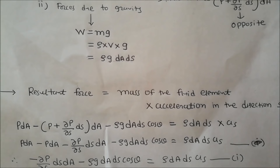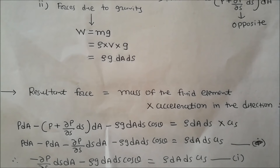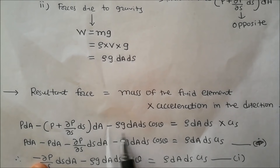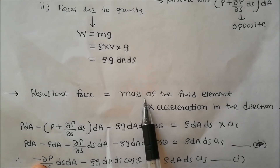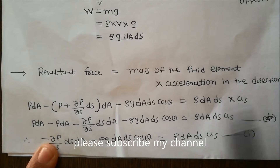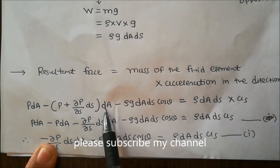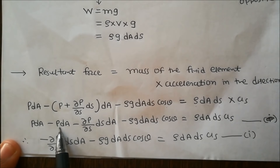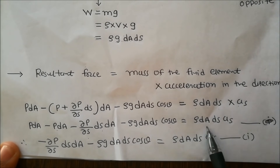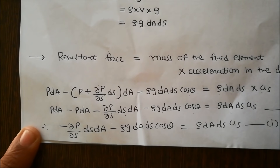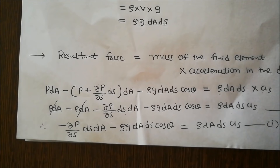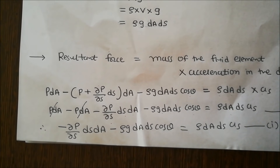Writing the full equation: resultant force equals mass times acceleration in direction S. So P·dA minus (P + ∂P/∂S·dS)·dA minus ρ·g·dA·dS·cos θ = ρ·dA·dS·aS. Simplifying, the P·dA terms cancel: −(∂P/∂S)·dS·dA − ρ·g·dA·dS·cos θ = ρ·dA·dS·aS.